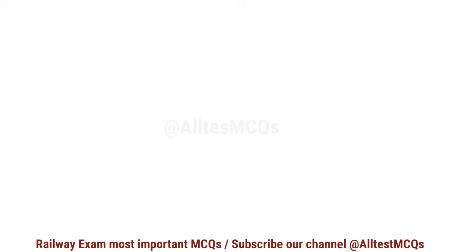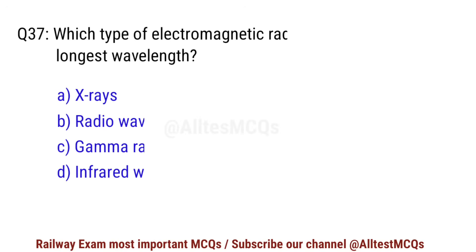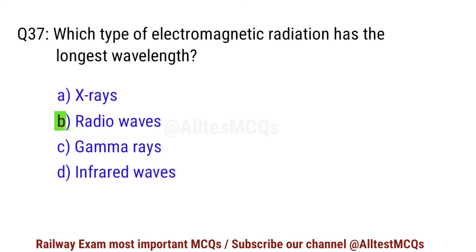Q37. Which type of electromagnetic radiation has the longest wavelength? Right option is B. Radio waves.